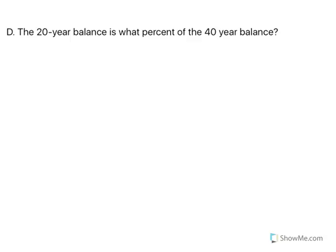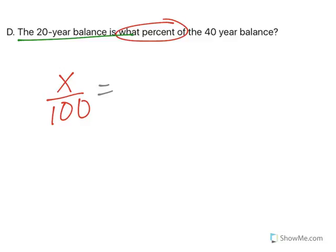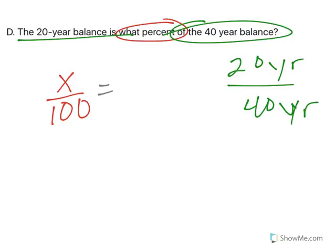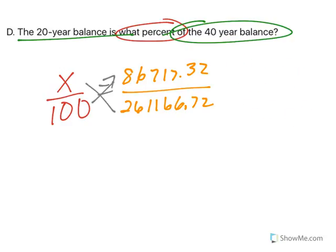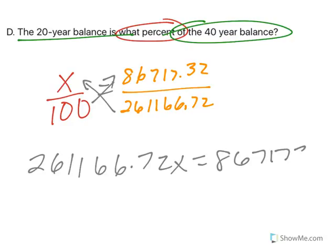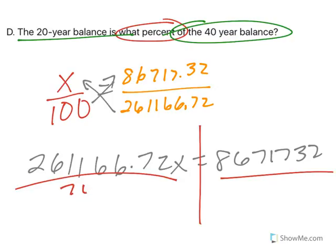In letter D, the 20-year balance is what percent of the 40-year balance? What percent means X over 100. "Is" is the 20-year balance over "of" which is the 40-year balance. So we put 86,717.32 over 261,166.72. We solve this proportion by cross-multiplying: 261,166.72 times X equals 86,717.32. We divide by the number in front of X and we end up with 33%.